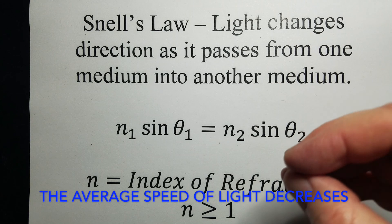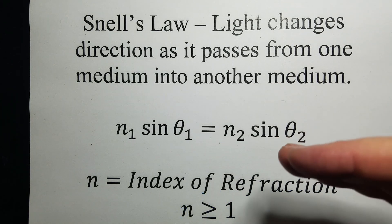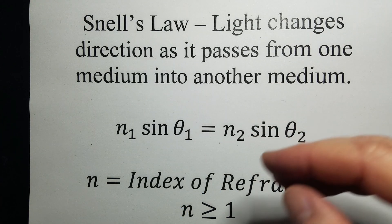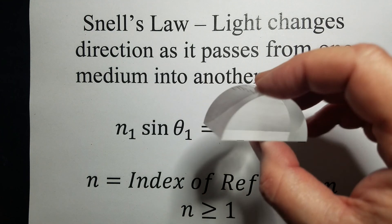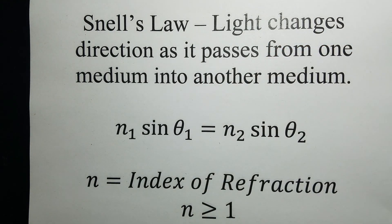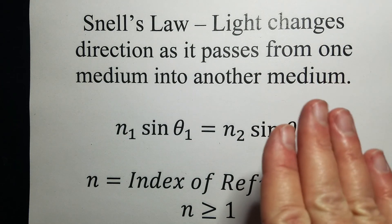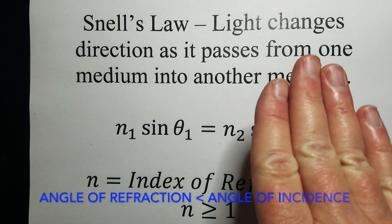As light goes from, in this case for our lab, a less optically dense material, which is air, into a more optically dense material, which is this plastic, the light's going to change direction and move towards the normal and slow down.